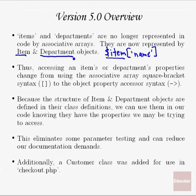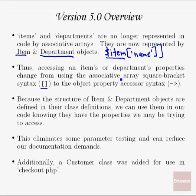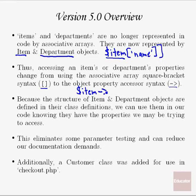Instead of passing associative arrays between functions to access item information, we're going to be passing item and department objects between functions. That's going to change how we access our item properties from the square bracket syntax to the object property accessor syntax — the dash followed by the greater than sign — which we learned about in the last lesson. Now if we have an item object that has been instantiated, this is how we're going to access and set its property values.